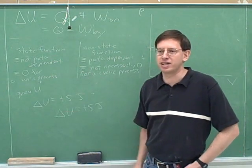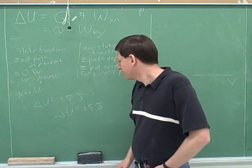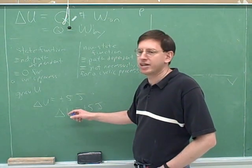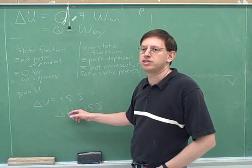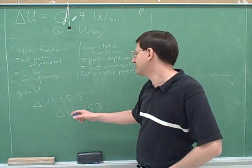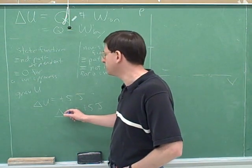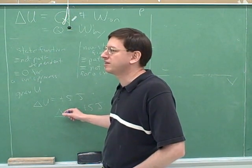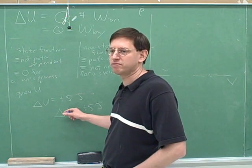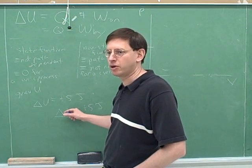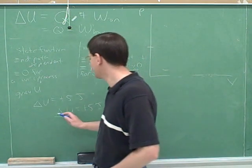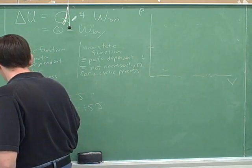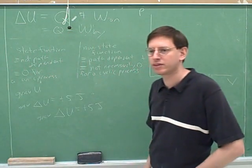But the path doesn't matter for a state function. After all, we know that delta U is just mg delta h — just the change in height. Another way to put this is that delta U is U final minus U initial. That means it only depends on the final and initial points, not on the path.